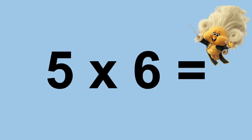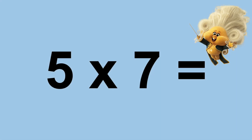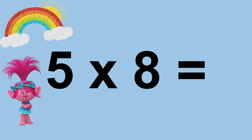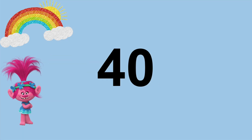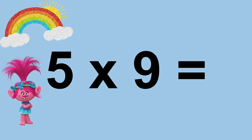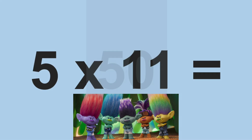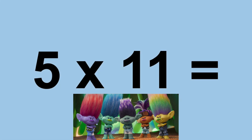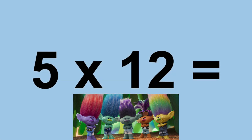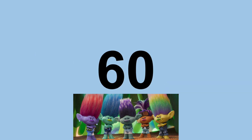Five times six equals thirty. Five times seven equals thirty-five. Five times eight equals forty. Five times nine equals forty-five. Five times ten equals fifty. Five times eleven equals fifty-five. Five times twelve equals sixty.